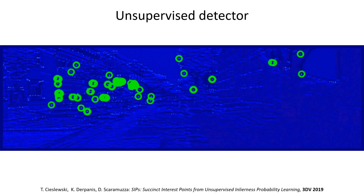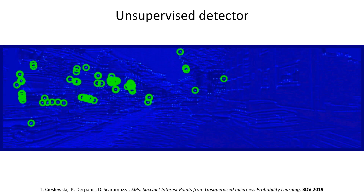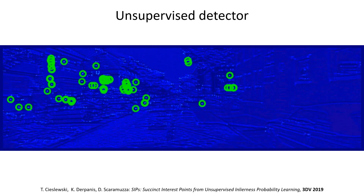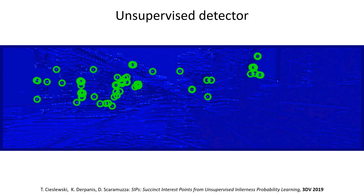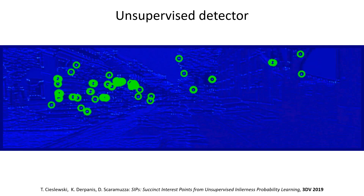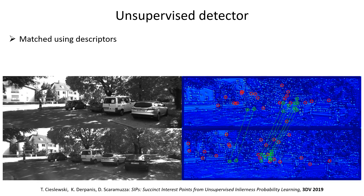We propose a new CNN-based detector that we train to be succinct. Its output is a per-pixel score, which we can see in blue here. Interest points, shown as green circles, are obtained from it using non-maxima suppression. The interest points can be matched using a descriptor. Here, we see inlier matches between two frames, shown as lines.